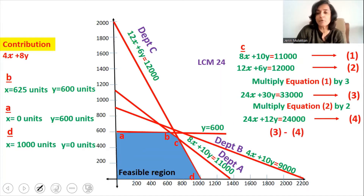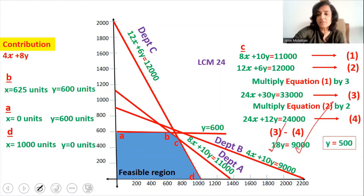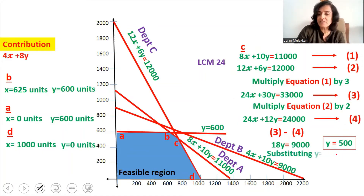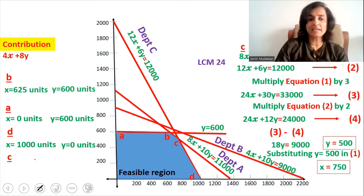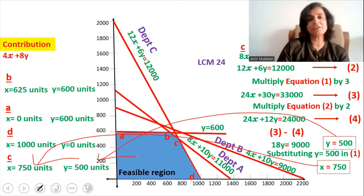Equation three minus equation four: 24X minus 24X is zero, 30Y minus 12Y equals 18Y, and 33,000 minus 24,000 equals 9,000. So Y equals 9,000 divided by 18, which is 500 units. Substituting Y equals 500 into equation one, we get X as 750 units. So for point C, X equals 750 units and Y equals 500 units.